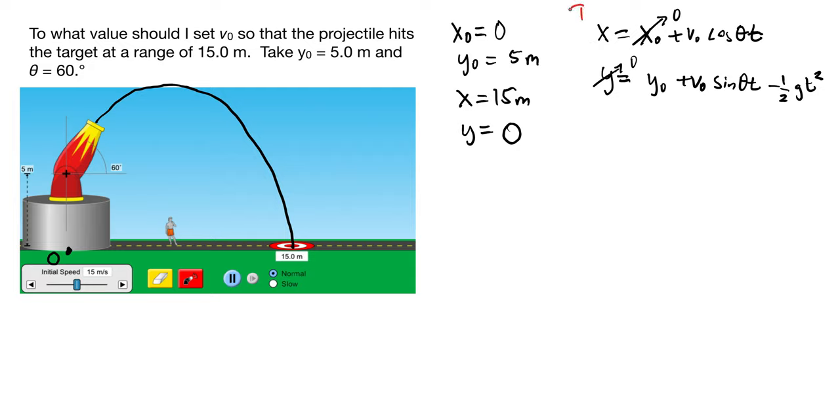I'm going to call that equation one, and I'm going to solve equation one for the time. So if I do that, then we get that the time is just x over V0 cos theta.